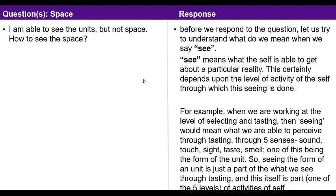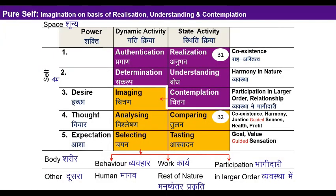When you say you are able to see units but not space, what you essentially mean is that you are not able to see the form of space. That is true — space is not a unit, it has no defined size. It is unlimited, therefore you cannot see its form. But it does not mean you cannot see that reality. The self has the capacity to see form, but also the capacity to see beyond form. At the level of selecting and testing, you can see the form of a unit; at analyzing and comparing, you can understand the effect of one unit on another.